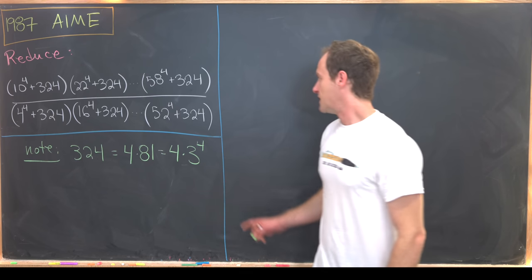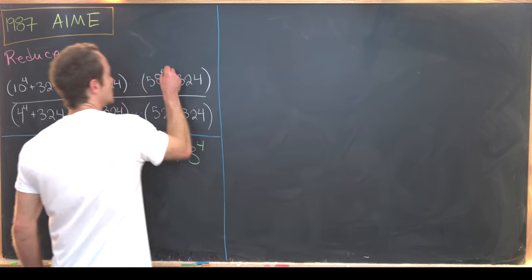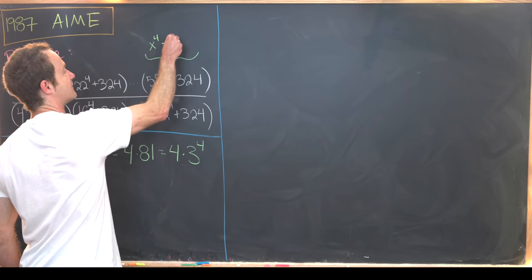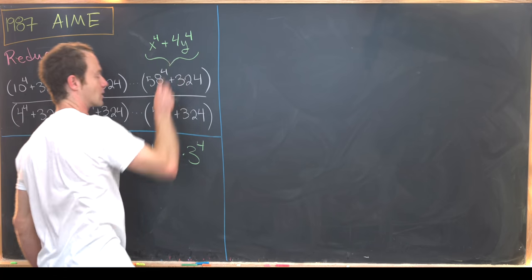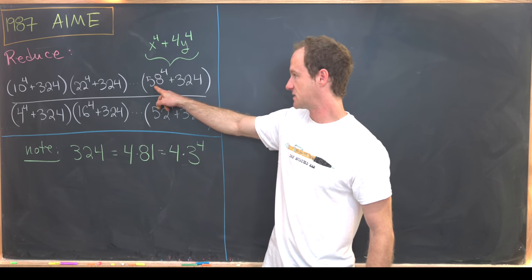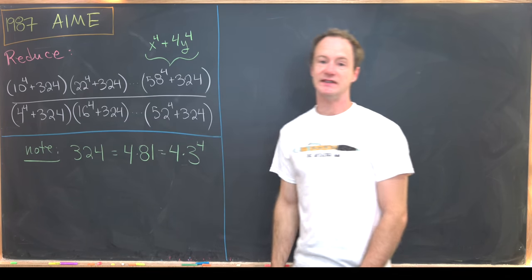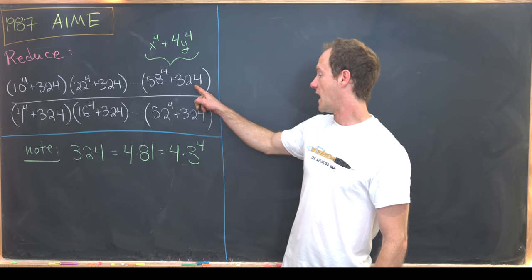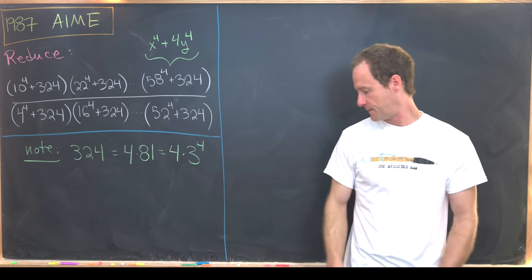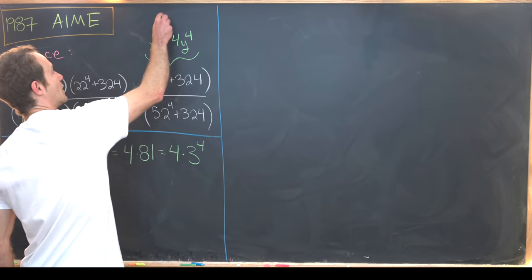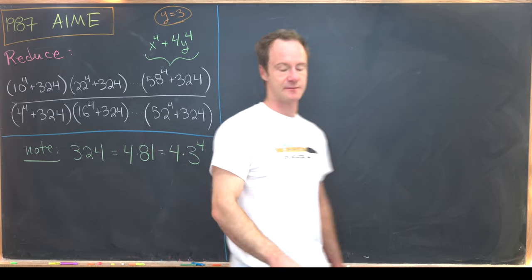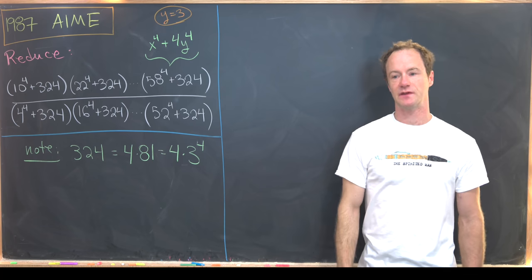So from here that means each of these looks like x to the fourth plus 4y to the fourth. And that's obviously where x is equal to 58 in this case, 22 in that case, and 10 in the first case. And then y, well that's going to be equal to 3. So let's maybe point that out. X equals whatever and y is always equal to 3 in this case. Well, maybe there's a factorization for something like this.